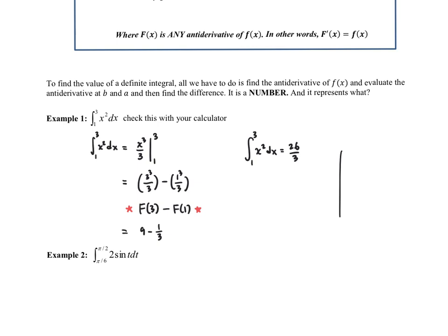That means if I graph X squared from 1 to 3, the area under the curve between the curve and the x-axis from X equals 1 to X equals 3 equals 26 thirds. We've got an exact value for that area.